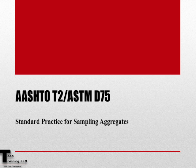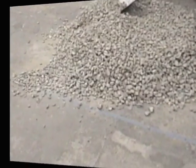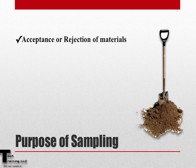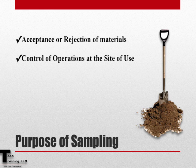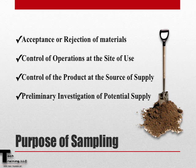AASHTO T2 and ASTM D75 are the standard practice for sampling aggregates. Some of the purposes of obtaining samples would include acceptance or rejection of materials, control of operations at the site of use, control of the product at the source of supply, or preliminary investigation as a potential supply.